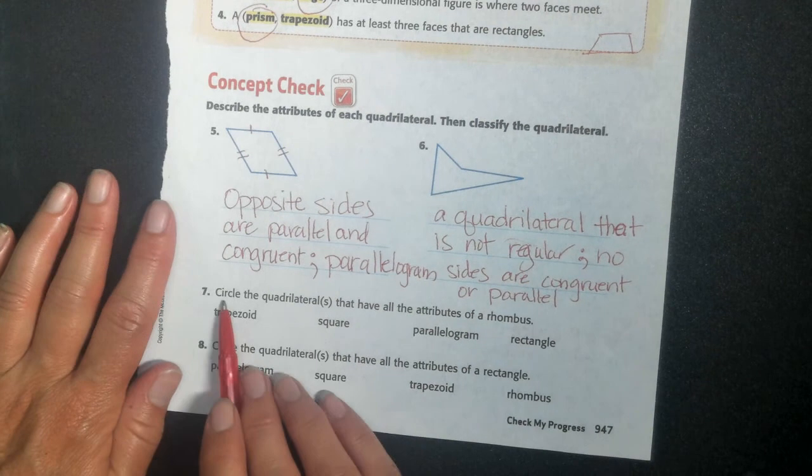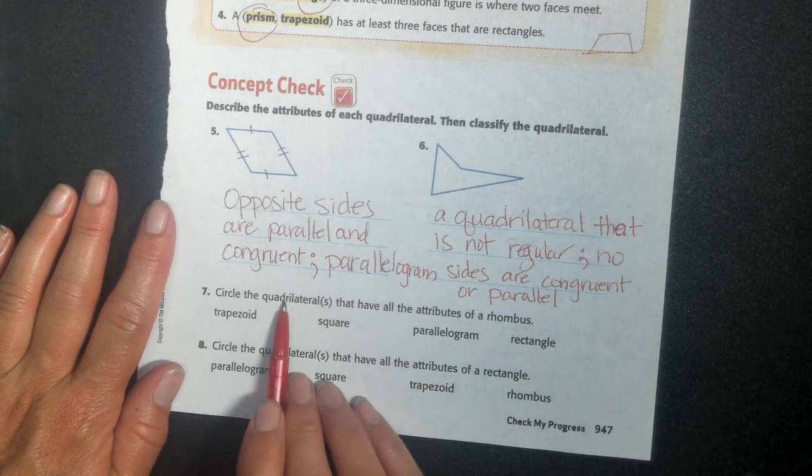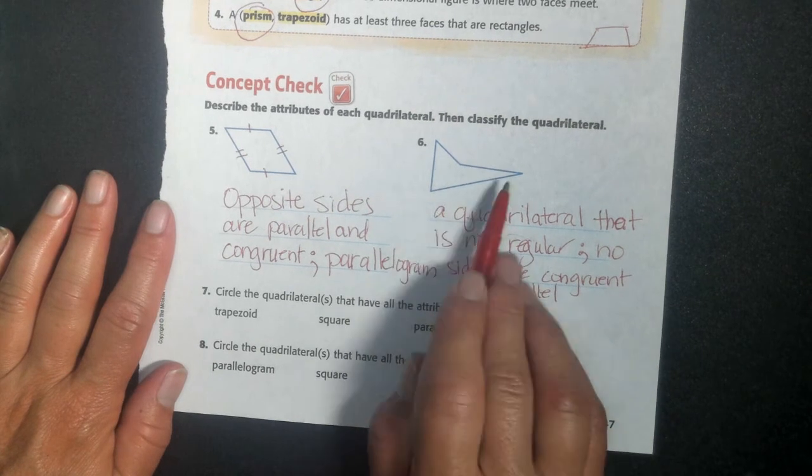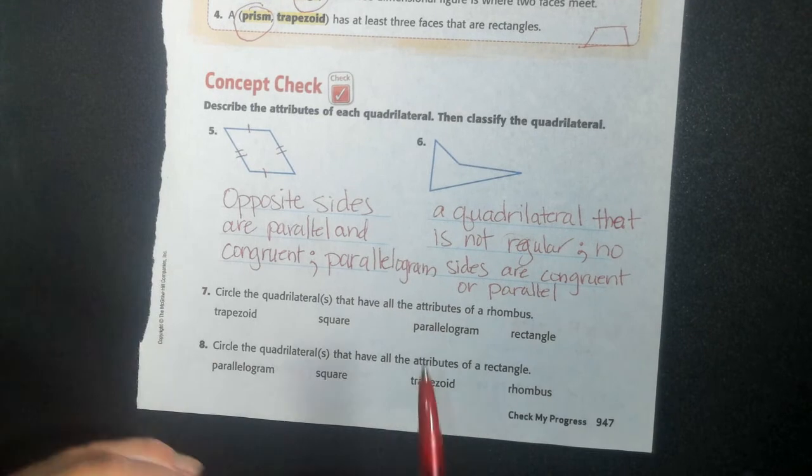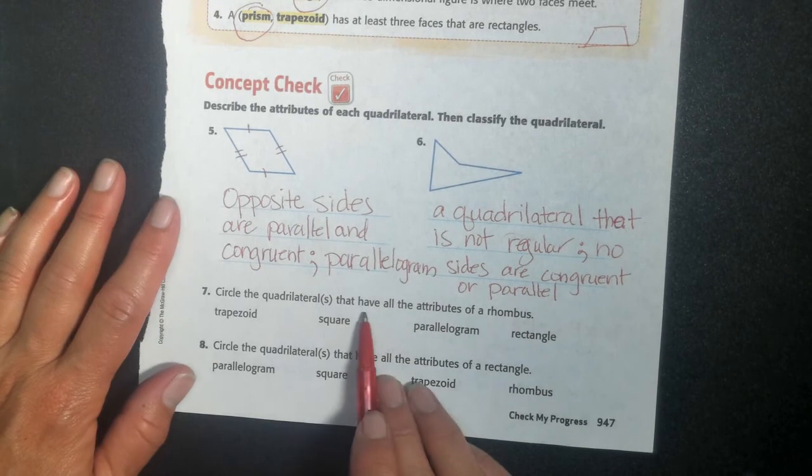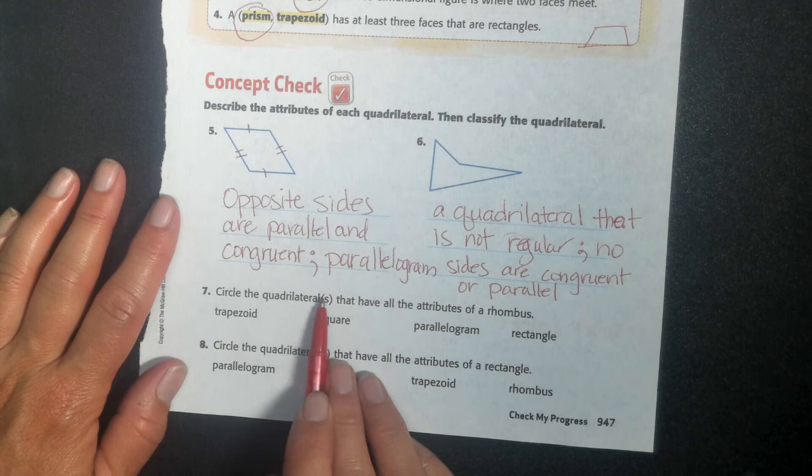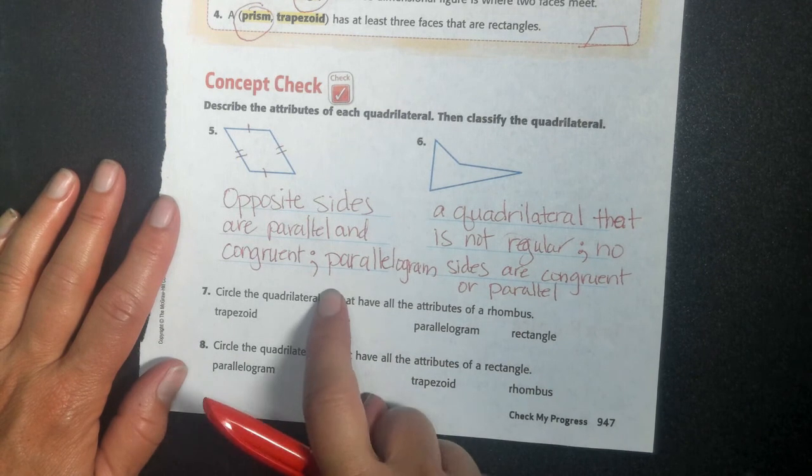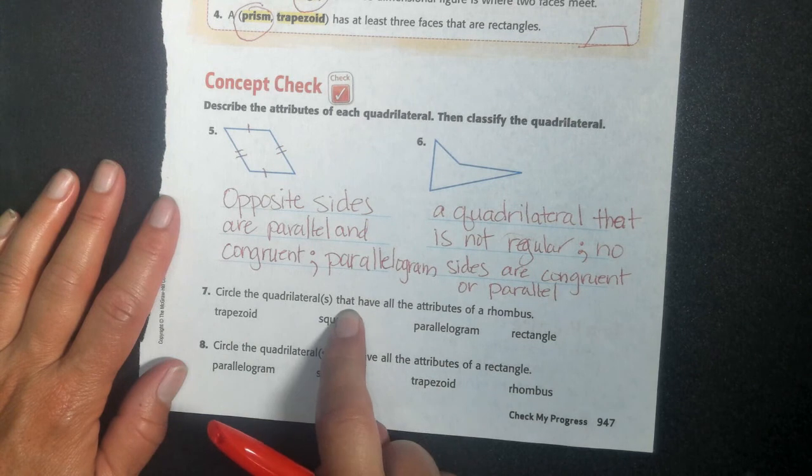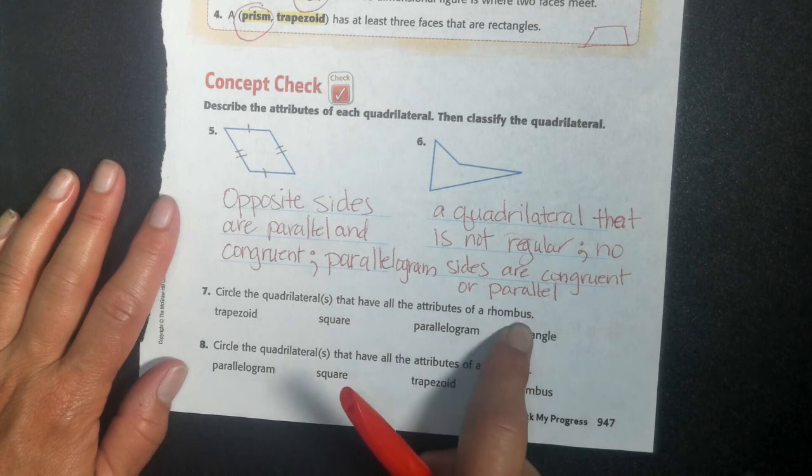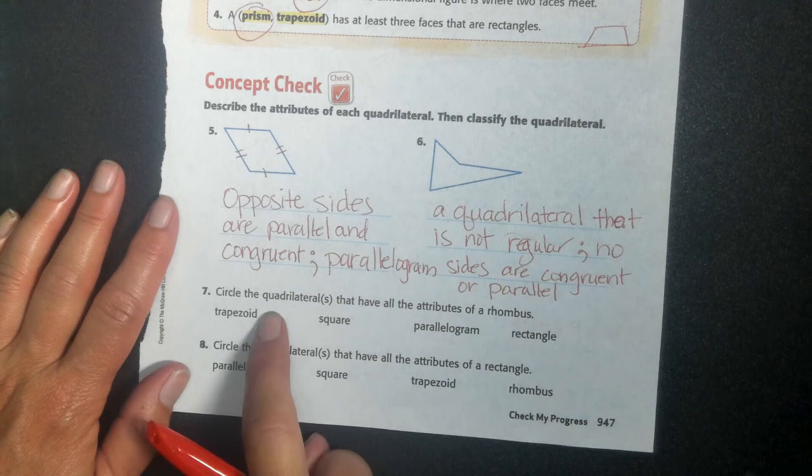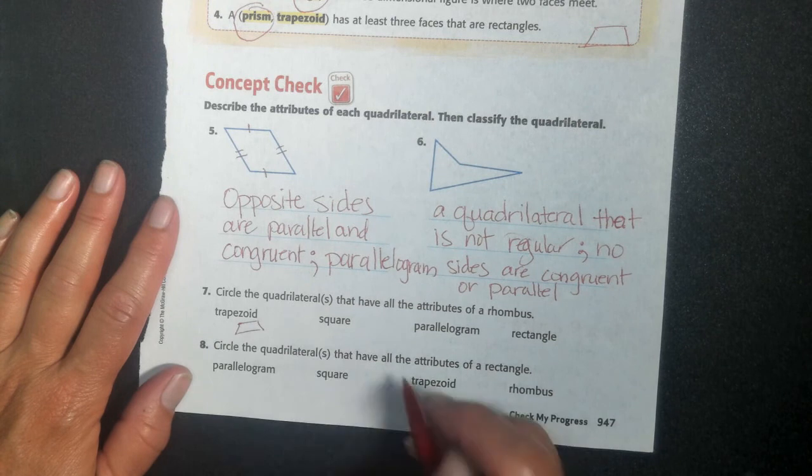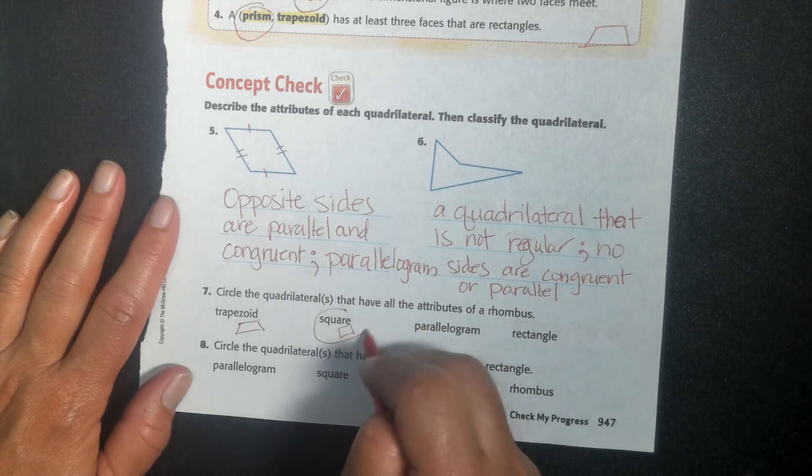Next question. Circle the quadrilateral. A quadrilateral is any shape that has four sides. This is a quadrilateral. It has four sides. It's a shape. Everything's straight. No curves. So circle the quadrilateral or S. There could be more than one if they put that up in S in the parentheses. It's like maybe there's one, but there might be more that have all the attributes of a rhombus. So a trapezoid? No, it's not a rhombus. All sides are not equal. A square? Yeah, that would work. Let's circle it.